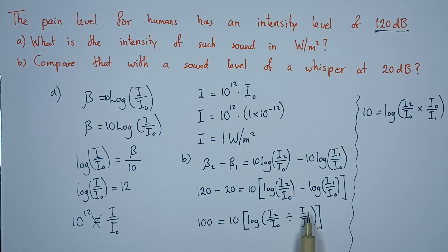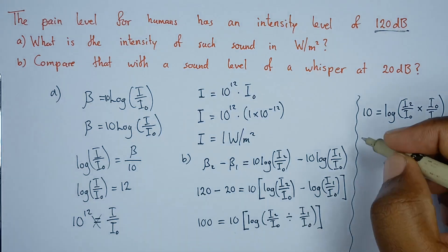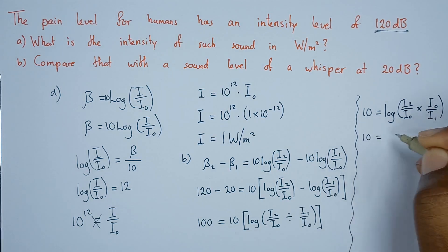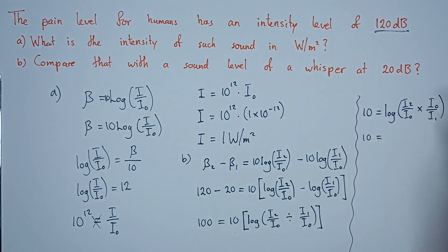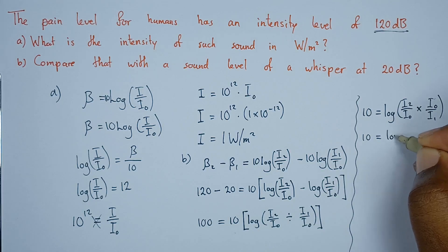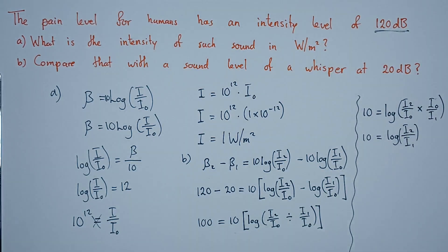I've just taken the reciprocal of this. From there we can say 10 equals, so the I naught and the I naught will just cancel out. So 10 equals the logarithm of I2 over I1.